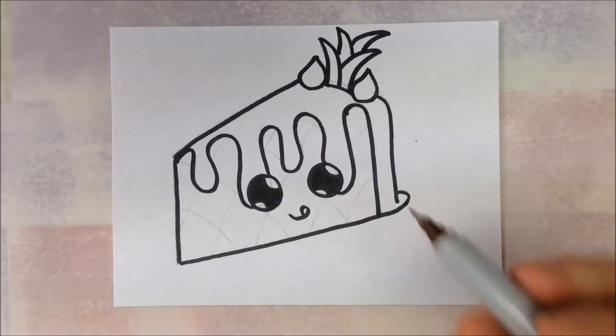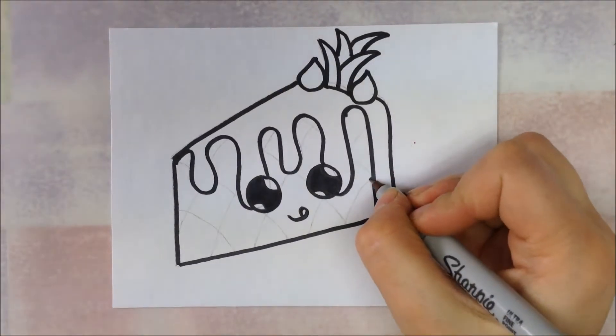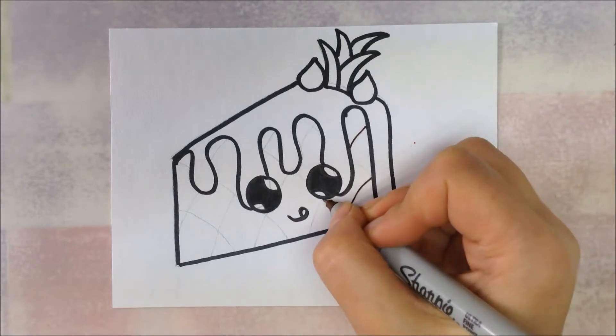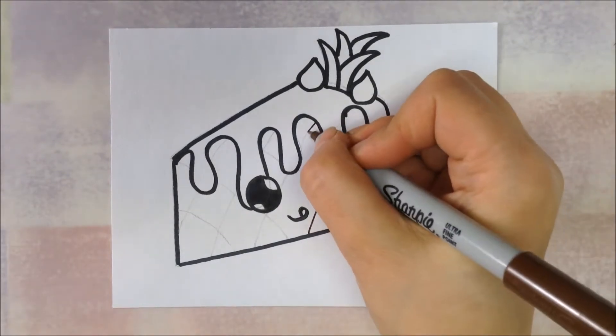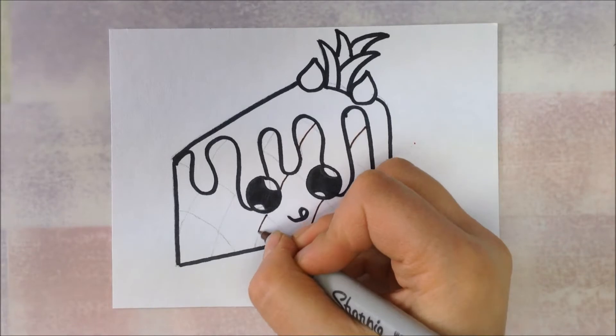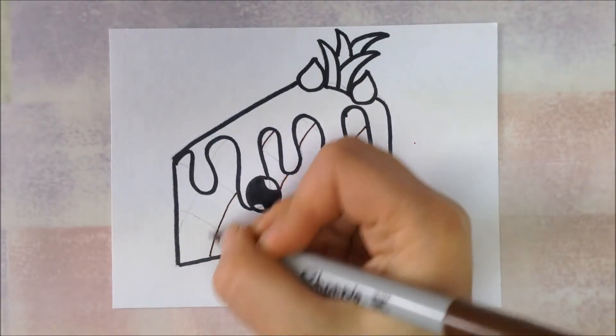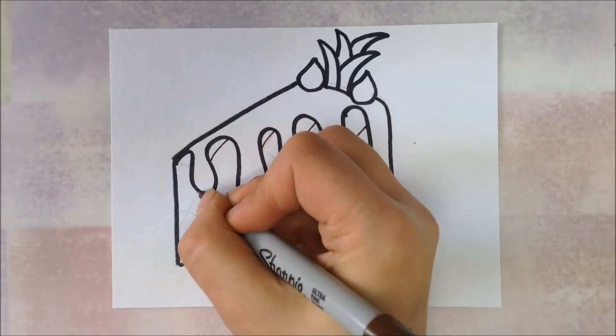And now we're going to get out a brown thin permanent marker for the lines on the outside of the pineapple. If you don't have a brown thin permanent marker, you can do this part with the black permanent marker. It just looks better with the brown, but it looks just as good with the black permanent marker.